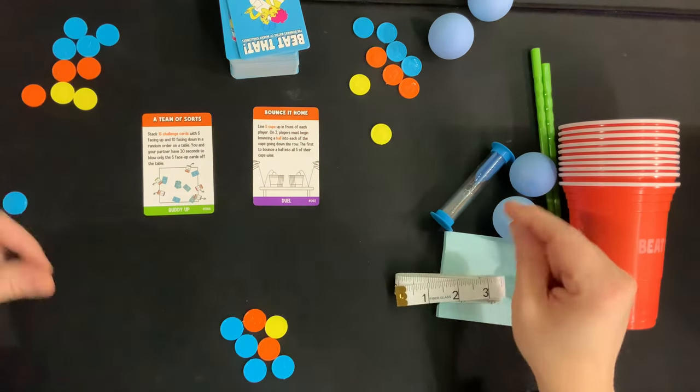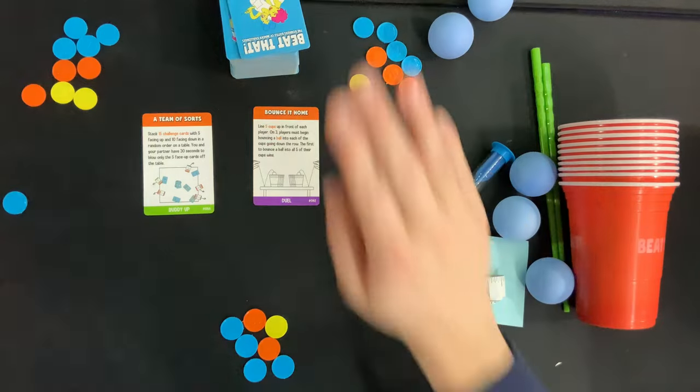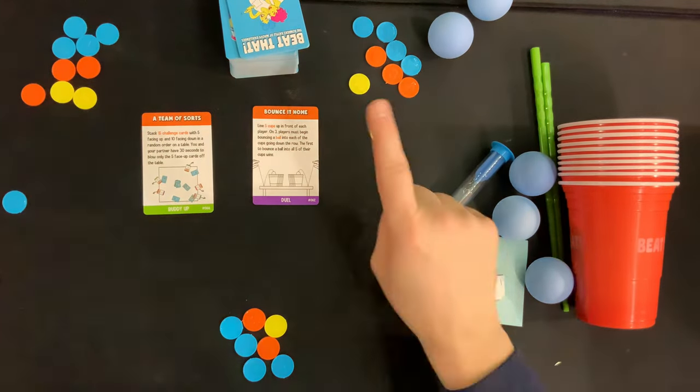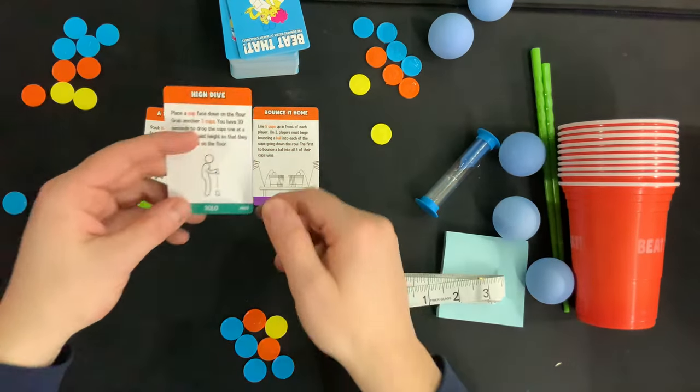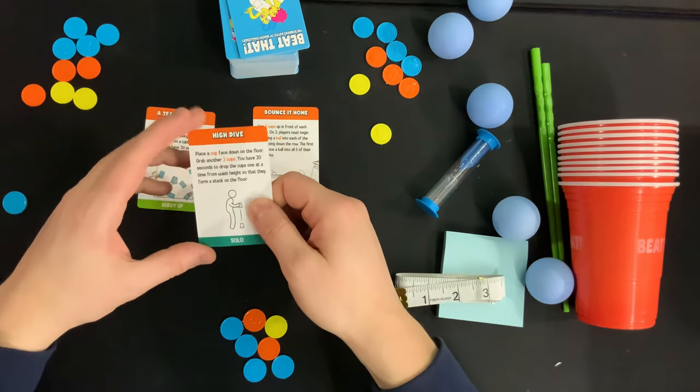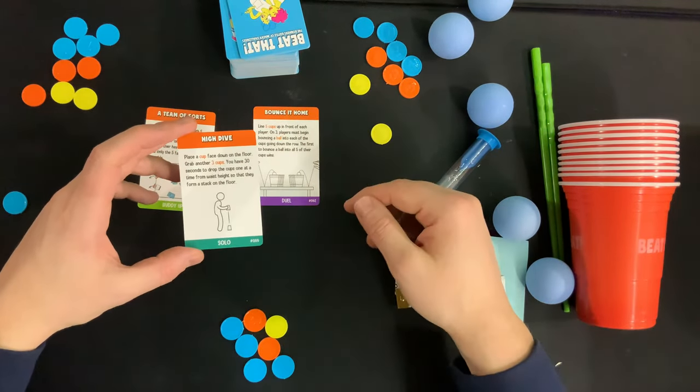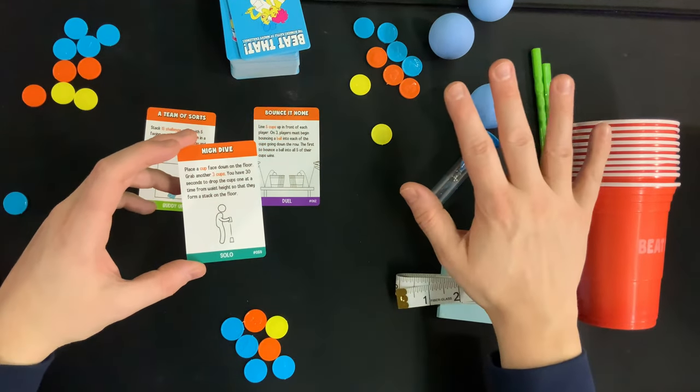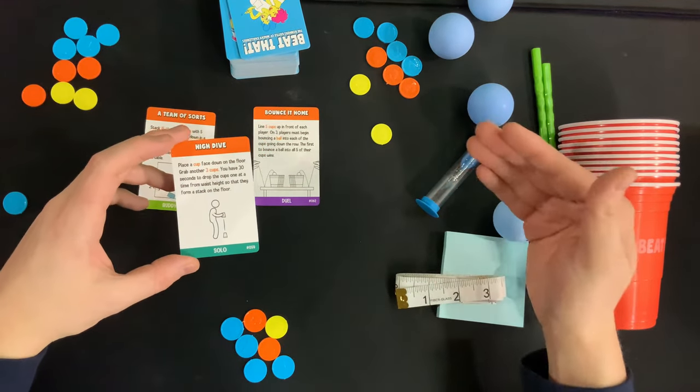Now in the event of a tie play on using only solo challenge cards until there is only one winner. What I think this means is any players who are tied for the lead at the end of 10 rounds are then going to draw a solo challenge and then do it. If there's only one person that's left being the winner then they win.